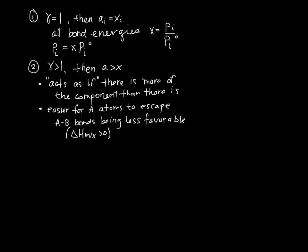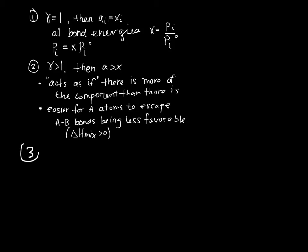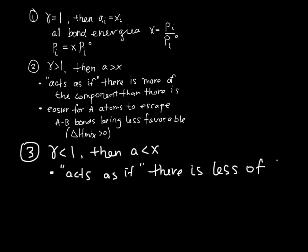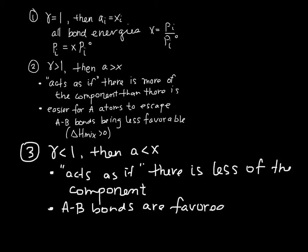And then our third case is essentially the opposite of number two. Here, gamma is less than one. A is less than X. It acts as if there is less A than there really is. So the evaporation of A will be happening more slowly because it seems like there is less there. This means that A-B bonds are favored or that the enthalpy of mixing is less than zero.